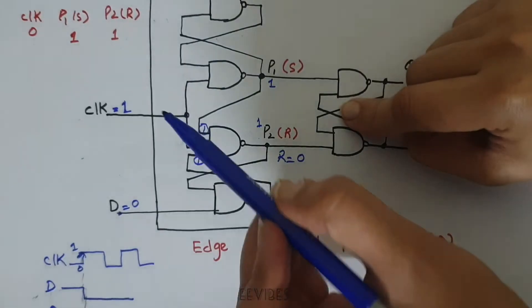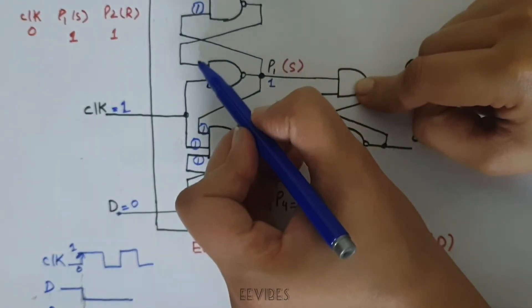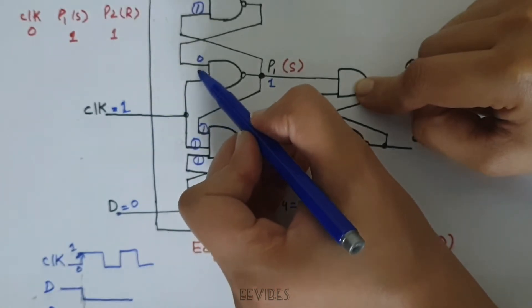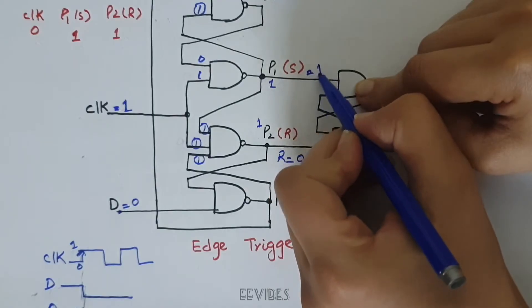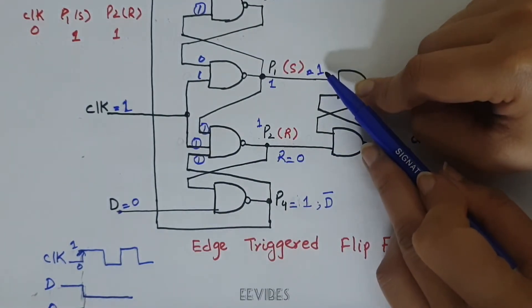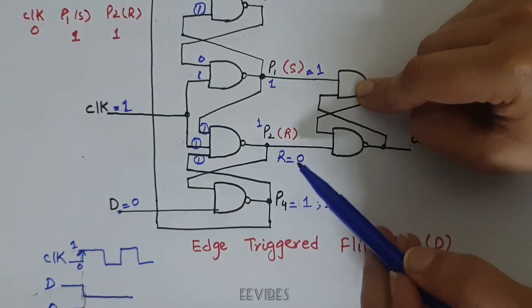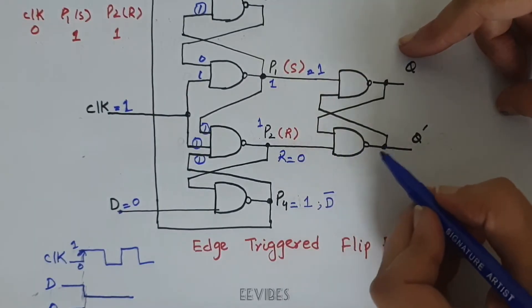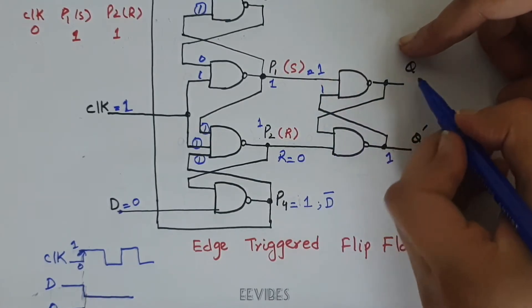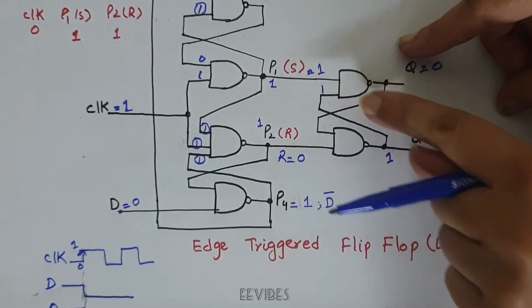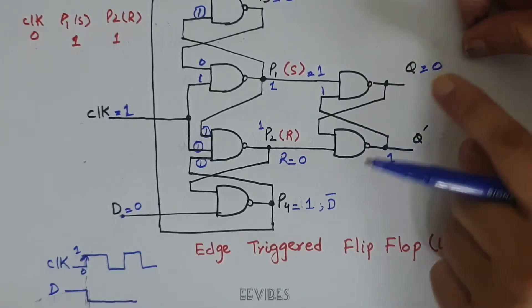R is equal to 0. P1 was equal to 1, so P3 was forced to be equal to 0. This 0 is fed at this input, while this input is common with the clock, so 0 with clock 1 forces S to be equal to 1. Now S input has switched to 1 and R input has changed from 1 to 0. This 0 forces this NAND gate to produce output equal to 1, and this 1 is fed back to the upper NAND gate forcing its output equal to 0, hence making the value of D forwarded at the output side.